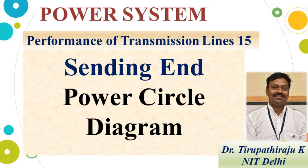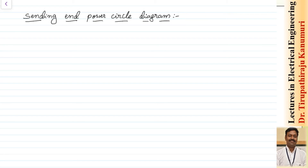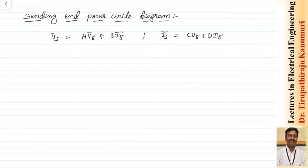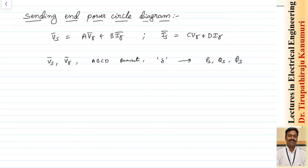Today we are going to discuss about the sending end power circle diagram. To calculate it, we know from the ABCD parameters that Vs equals A times Vr plus B times Ir, and Is equals C times Vr plus D times Ir. If we know the sending end voltage, receiving end voltage, ABCD parameters, and the load angle — the angle difference between Vs and Vr — we can easily calculate the sending end active and reactive powers as well as the sending end power factor.